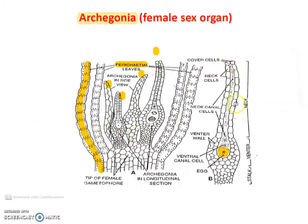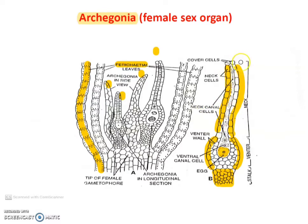The archegonium is covered by a jacket-like layer and it is divided into three parts: stock, venter, and neck. The stock provides nutrition to the upper part. In the venter there is an egg cell developed. The neck produces a canal, and in that canal there are neck canal cells, and venter cells are present. At the tip there are lid-like cover cells present. Because of those cover cells, archegonium is closed. The neck canal cells disintegrate and produce a sticky substance to attract the sperm.